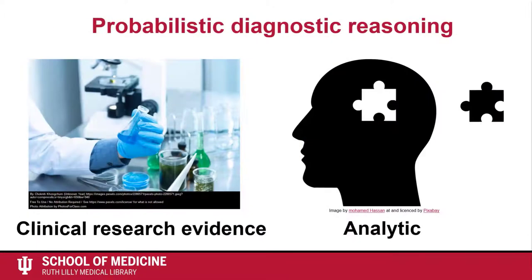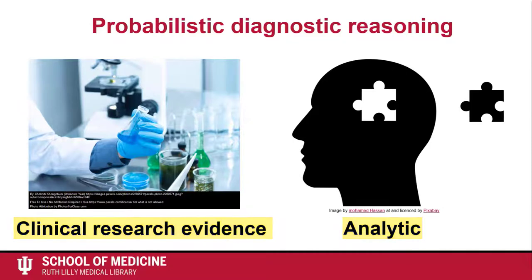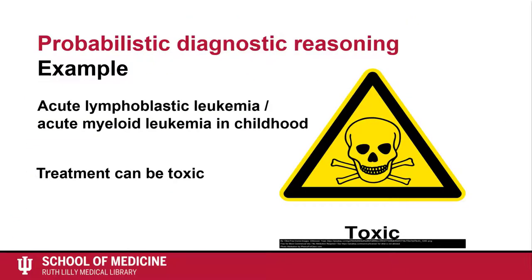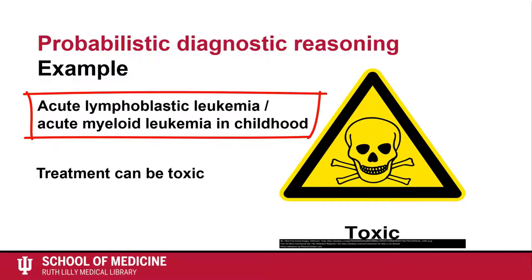Probabilistic diagnostic reasoning, on the other hand, is used when simple pattern recognition fails. This approach uses evidence from clinical research and a more analytic mode of diagnostic thinking. Take, for instance, acute lymphoblastic leukemia or acute myeloid leukemia in childhood. You can't use pattern recognition for this disease since symptoms may be similar to other diseases. Further, because treatment can be quite toxic, you want to be very sure that the patient has the disease before treating.